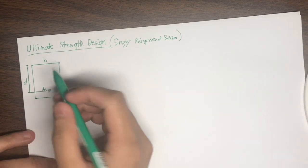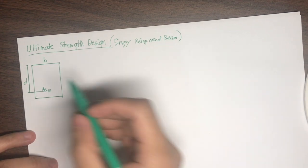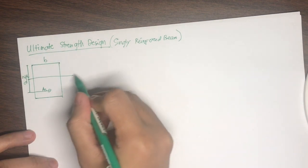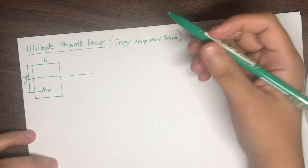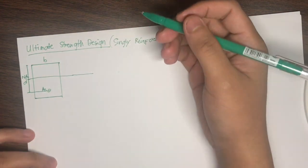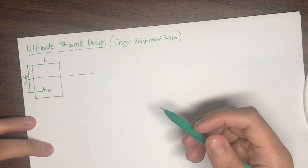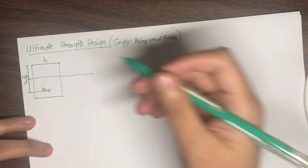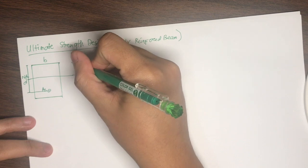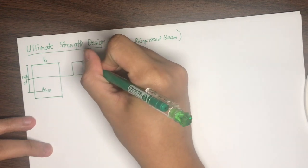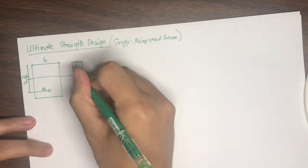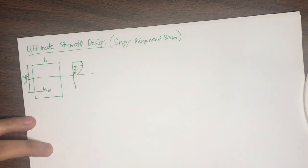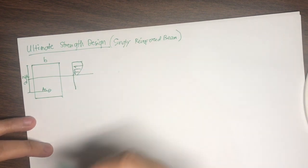We all know that if a beam is subjected to a positive moment, all parts of the beam above the neutral axis will be subjected to compressive stress, while the bottom part will be subjected to tensile stress. Because the tensile capacity of concrete is very low, we assume that only the top part undergoes compressive stress, while the tensile stress below the neutral axis is carried by the steel reinforcements.